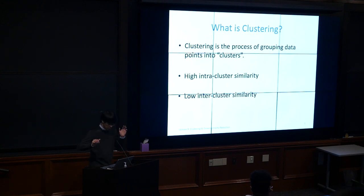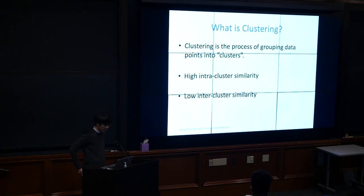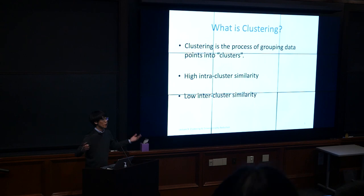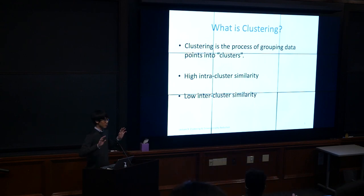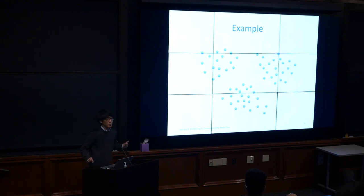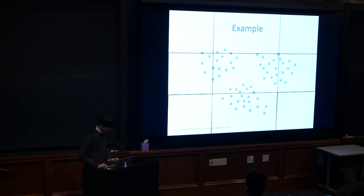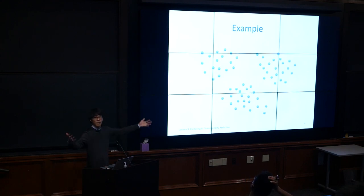For example, given this data, you'd say there are three clusters — and our human brains are very good at identifying that. Once we know there are three clusters, we can assume all data points in each cluster are similar. Instead of sampling uniformly and possibly getting points from the same cluster, we can sample one from each cluster and have a good representation of the whole dataset.